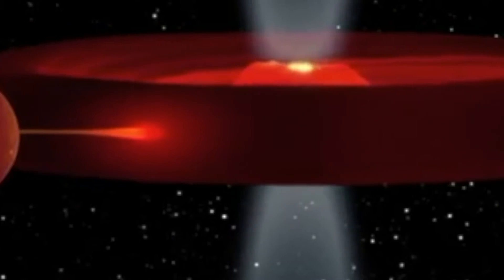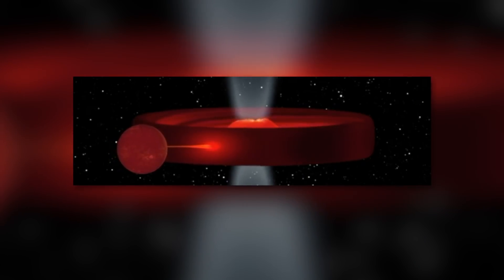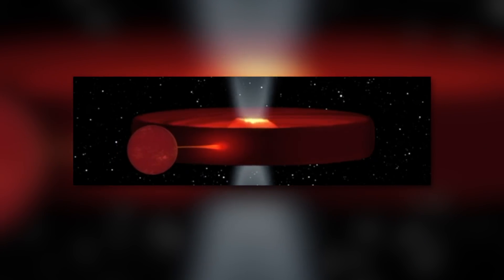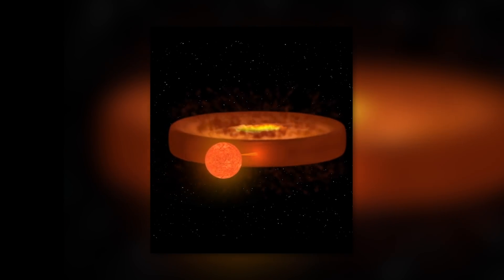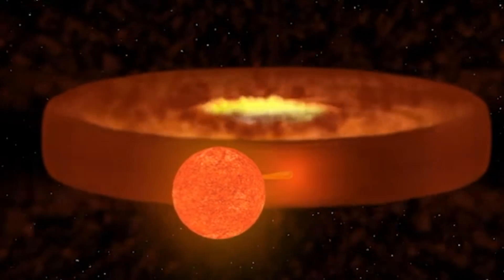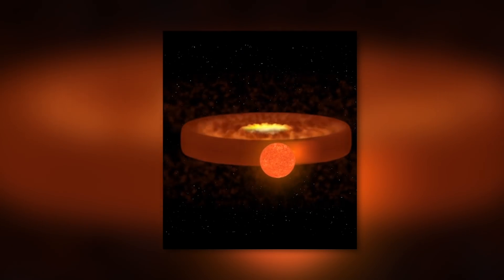However, the details here differ significantly from the previously discovered representatives of this phenomenon. According to this, the accretion disk in Swift J1357.2 behaves almost wave-like and ensures that the companion star of the system is regularly darkened.